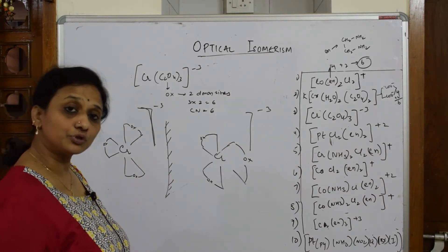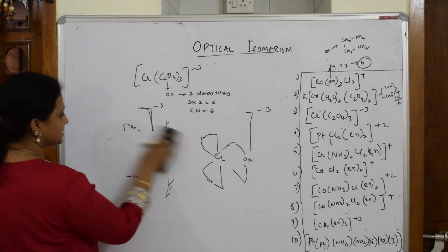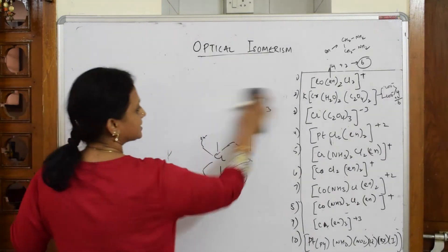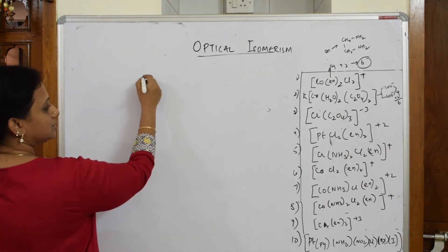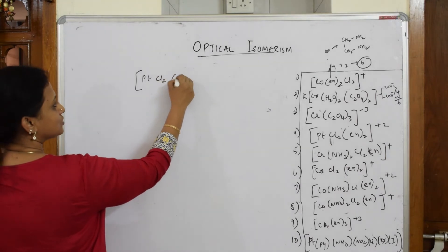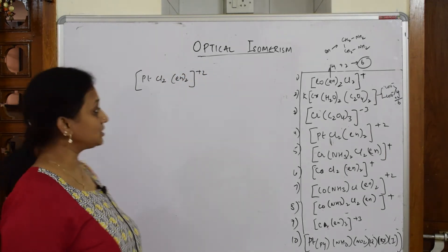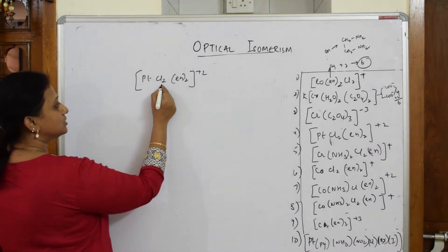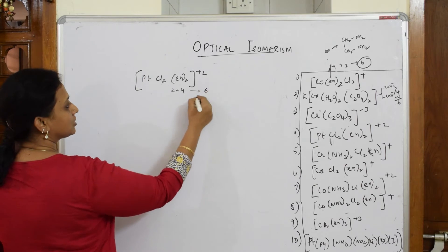Everything is complete, let's come back and do the fourth one. When I have to do the fourth one, it's the same thing. Let's take the example. The story is the same but you have to be careful in drawing. In the fourth example: platinum is the metal, Cl2, en2 +2. I have to draw optical isomers. The coordination number: this is two plus four, ethylenediamine is four, so six. Coordination number is six.